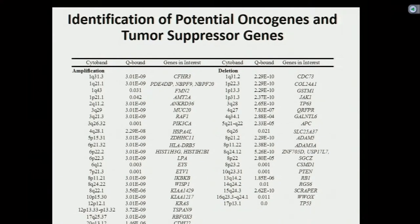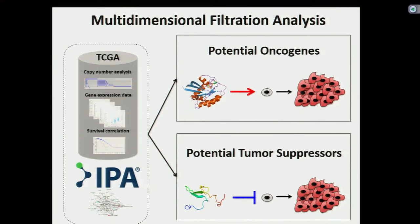Some other interesting genes also arose, such as the WWOX gene, the JAK1 gene involved in the JAK-STAT pathway, and other genes such as LPA, EYS, and TSPAN4. In order to narrow this exhaustive list down, I used a multi-dimensional framework using different types of analysis, including copy number analysis, genomic data, and survival correlation values from the Cancer Genome Atlas, combined with ingenuity pathway analysis to discover potential oncogenes and tumor suppressor genes.